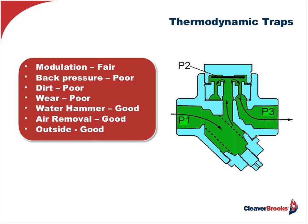When I'm talking about good, fair, or poor for trap attributes, it's all relative to other types of traps. For the thermodynamic trap: modulation — fair; back pressure — poor, doesn't work well with high back pressure; dirt — very bad, so if you've got a dirty system, don't put in a thermodynamic trap because it's going to foul the seal. It wears quickly but can be easily repaired. Water hammer — good. Air removal — good. Outside use — good, since it doesn't have as much fluid in it, but still has to be insulated when outside.